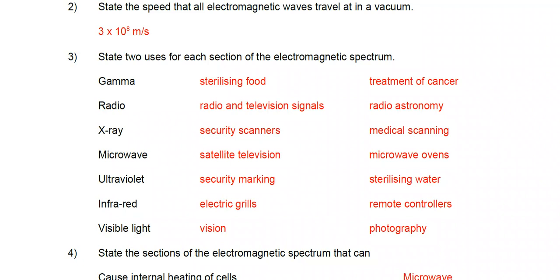Ultraviolet can be used for security marking and sterilizing water. Infrared: electrical grills, cooking food, and remote controls. Visible light: vision and photography.